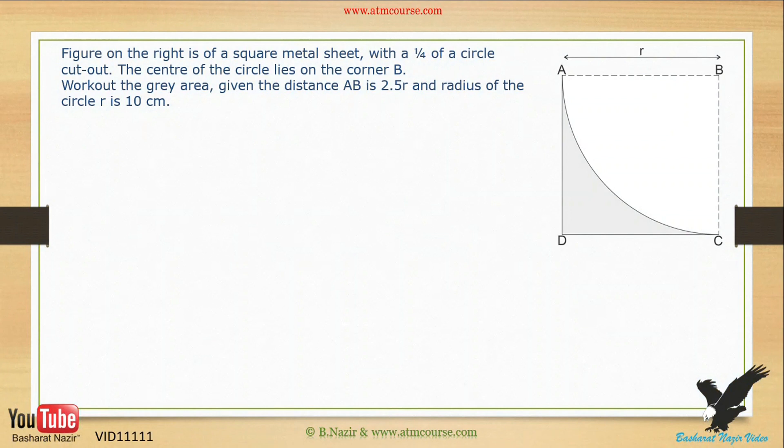Figure on the right is of a square metal sheet, with a quarter of a circle cut out. The center of the circle lies on the corner B. Work out the gray area, given the distance AB is 2.5R and radius of the circle R is 10 cm.